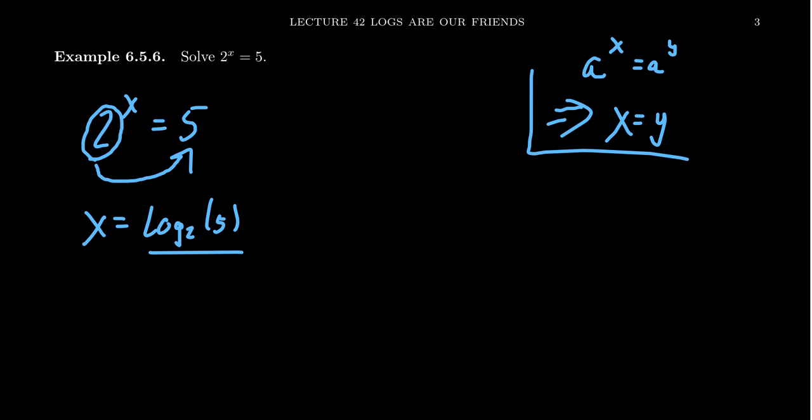You probably want to estimate that — say, rounded to three decimal places. When you consult your calculator, it likely doesn't have a log base 2 button. So by the change of base formula, you can write this as the natural log of 5 divided by the natural log of 2. You can use the common log too, but in calculus the natural log is the superior choice — it's the naturally occurring logarithm. For college-level work, let's get in the habit of using the natural log.